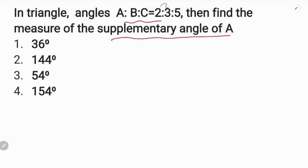2 by 3 by 5, total is 10. 10x is equal to the sum of the angles of the triangle.